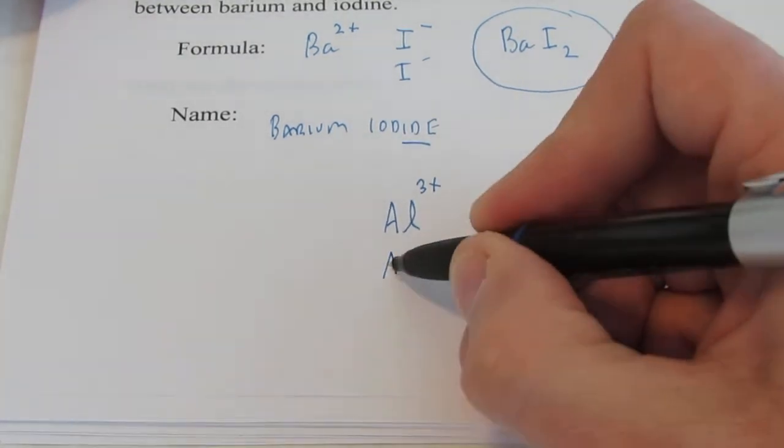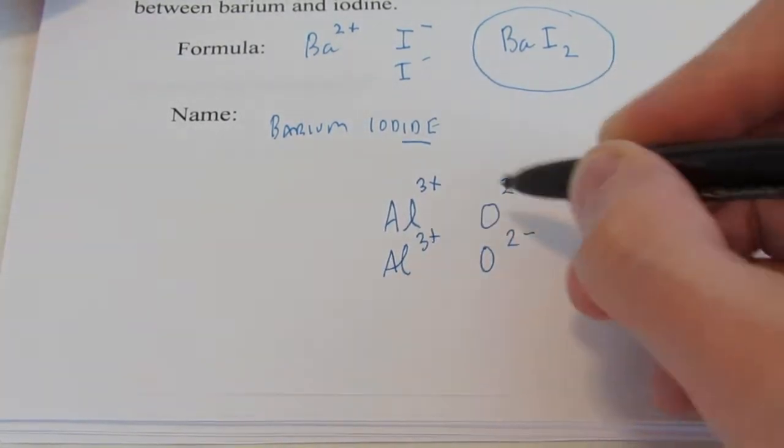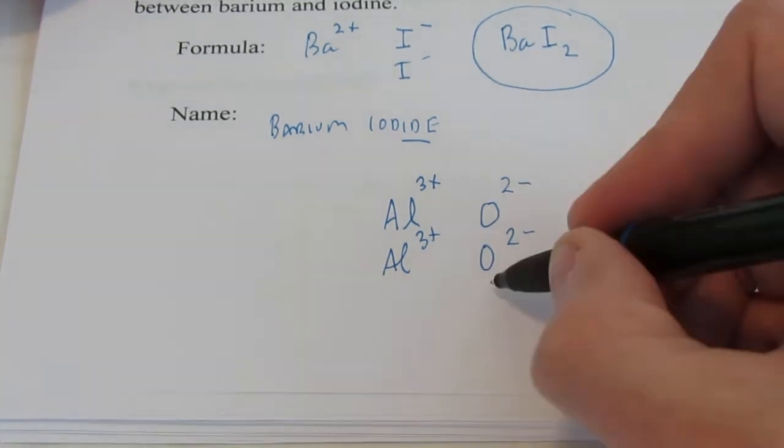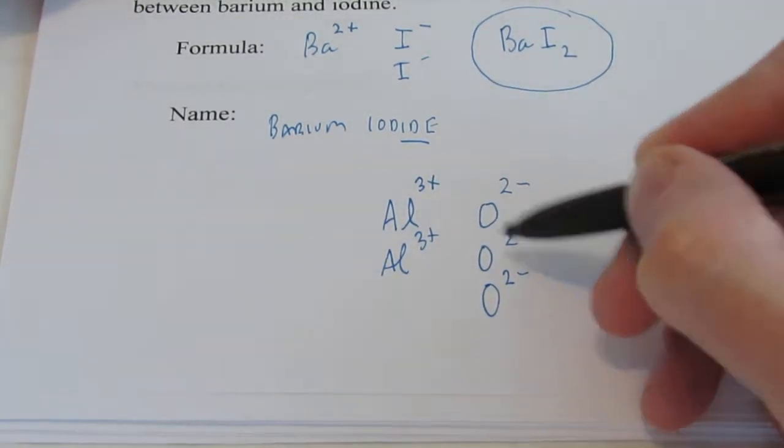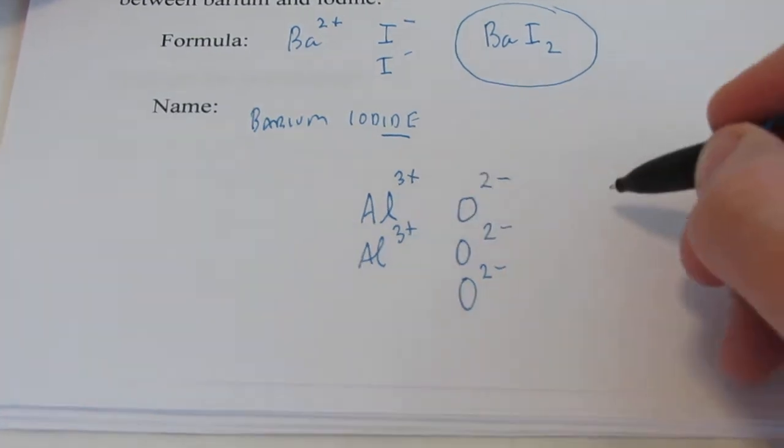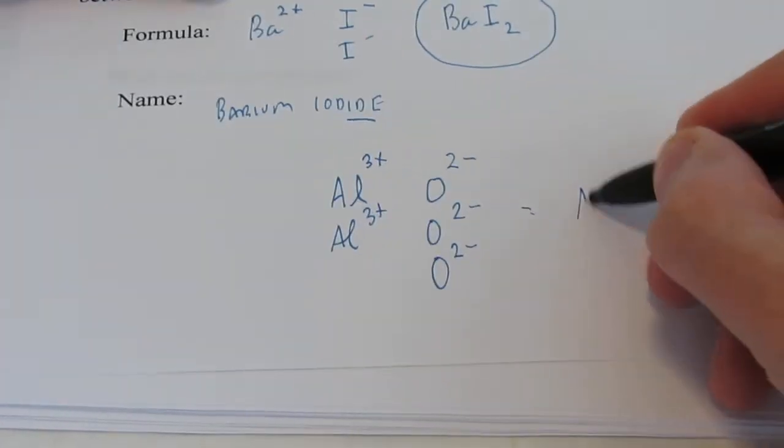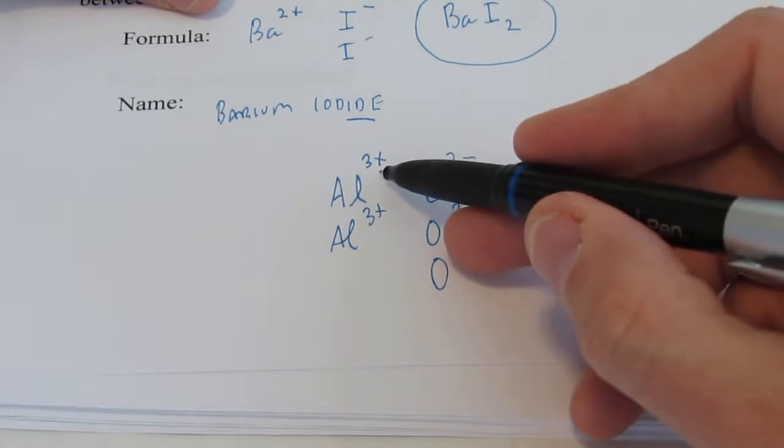Well, now I'd have 4 negatives against 3 positives. So let's add another aluminum. Now I have 6 positives against 4 negatives. And if I add another oxygen,